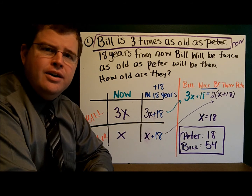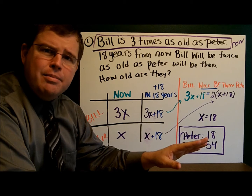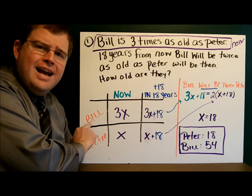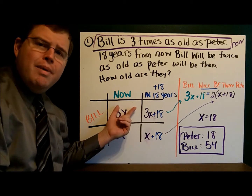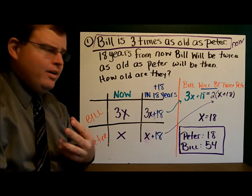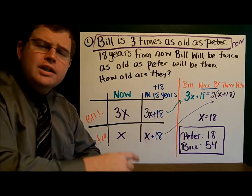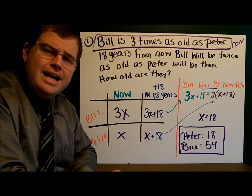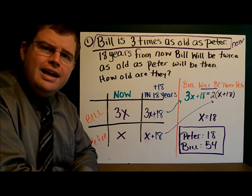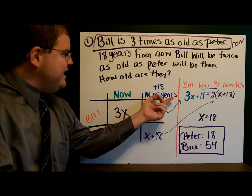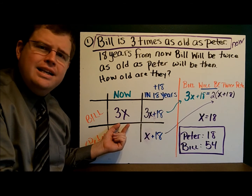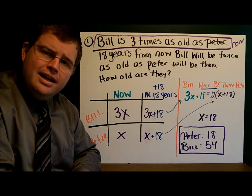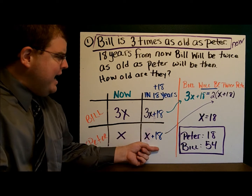What we're going to do is set up a table to organize the information. In the first column I'll put the guys: Bill and Peter. My first column shows what I know about right now. I know nothing about Peter's age, so I'll call Peter X, and Bill is three times as old as Peter, so he'll be 3X. In 18 years, Bill will be 3X plus 18, and Peter will be X plus 18.